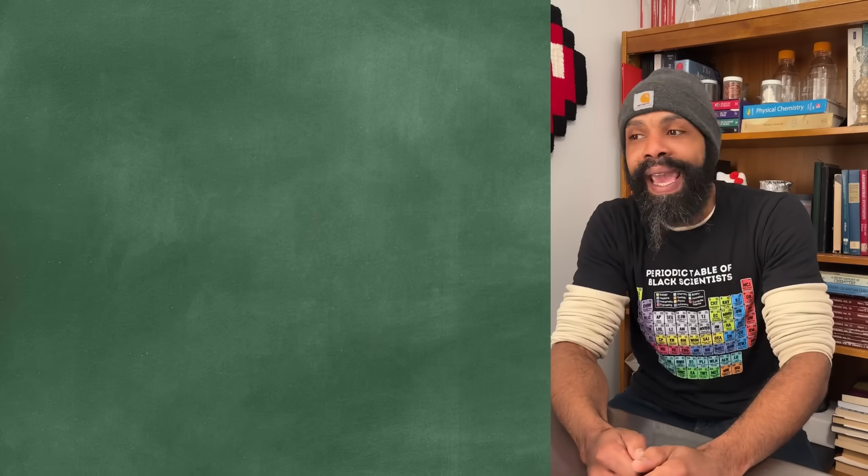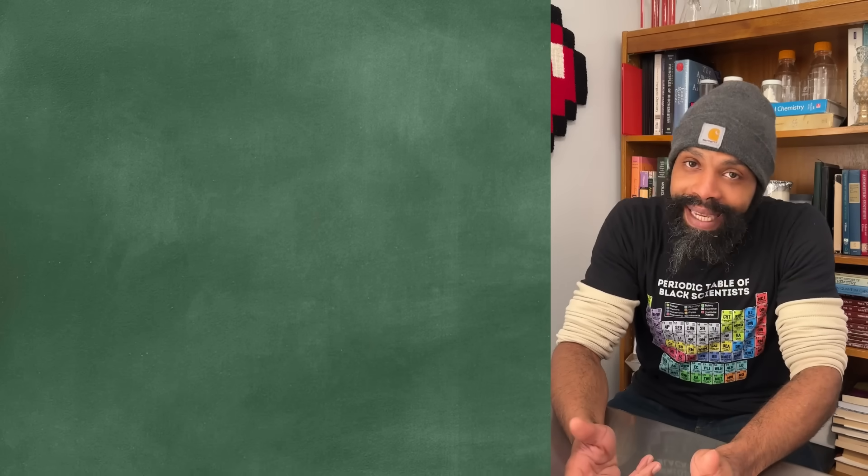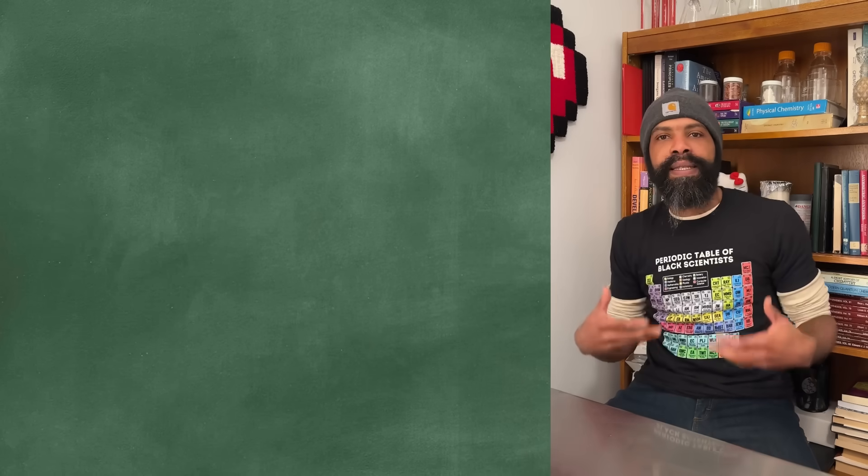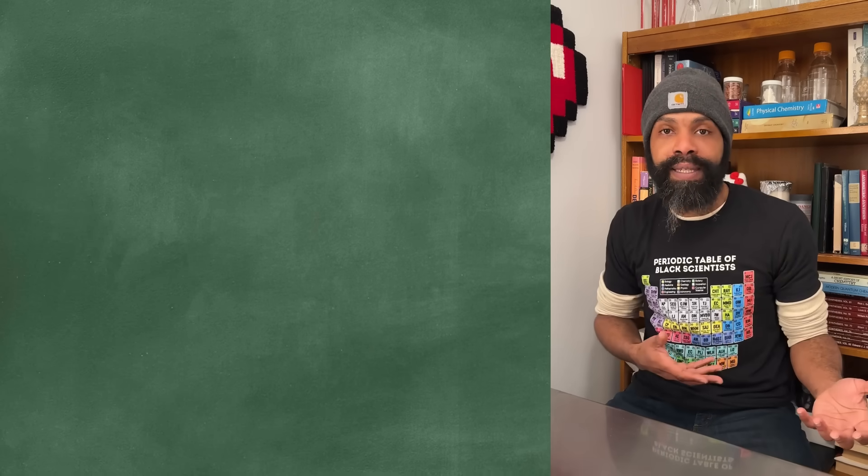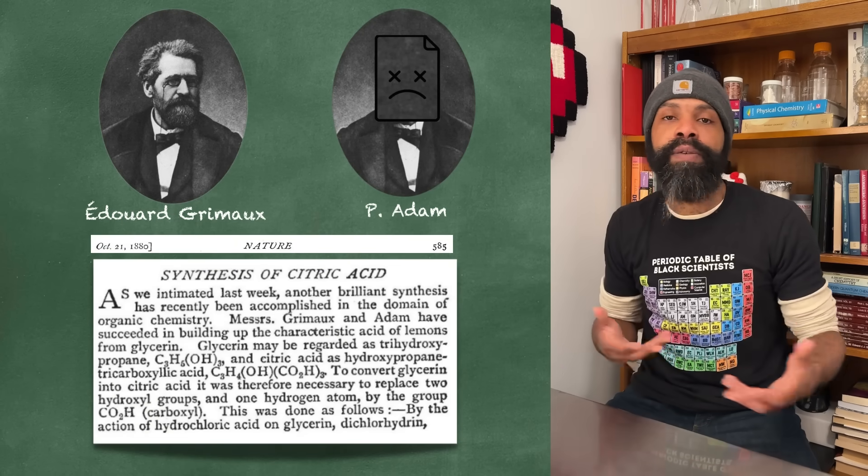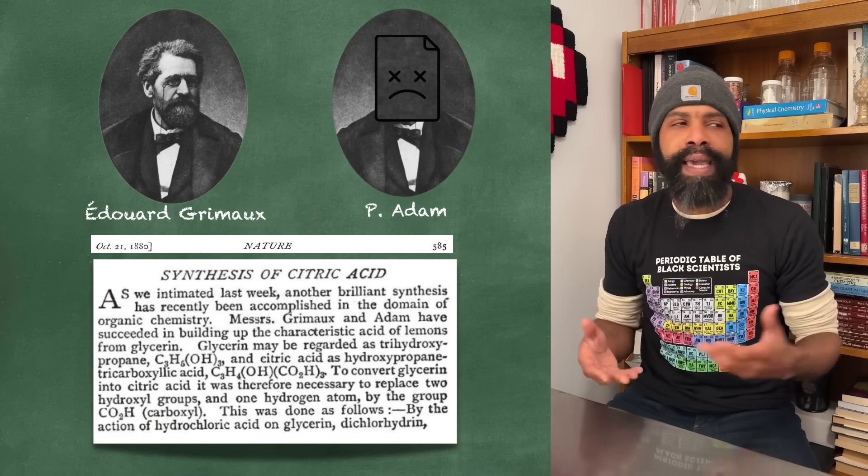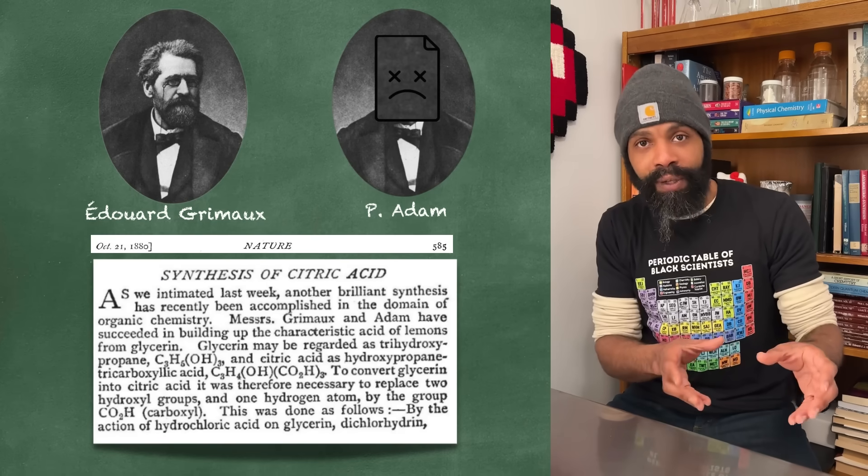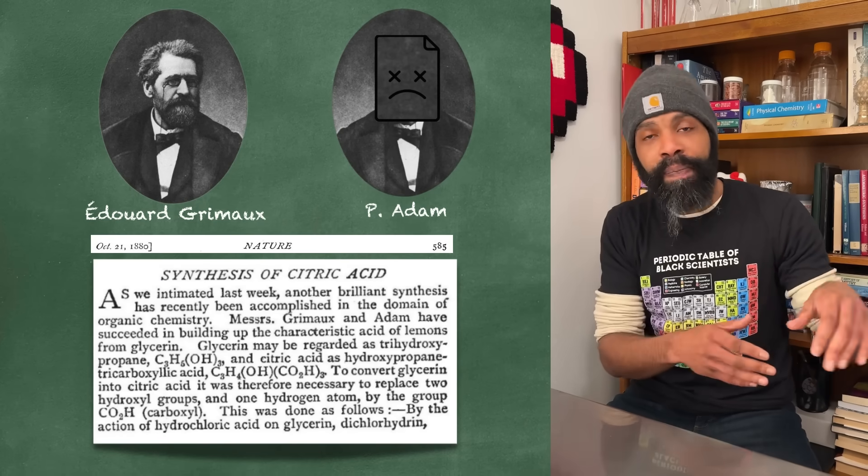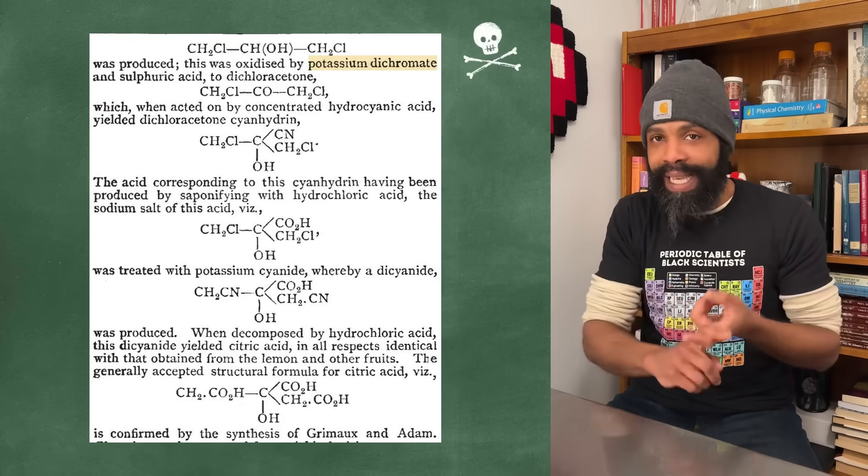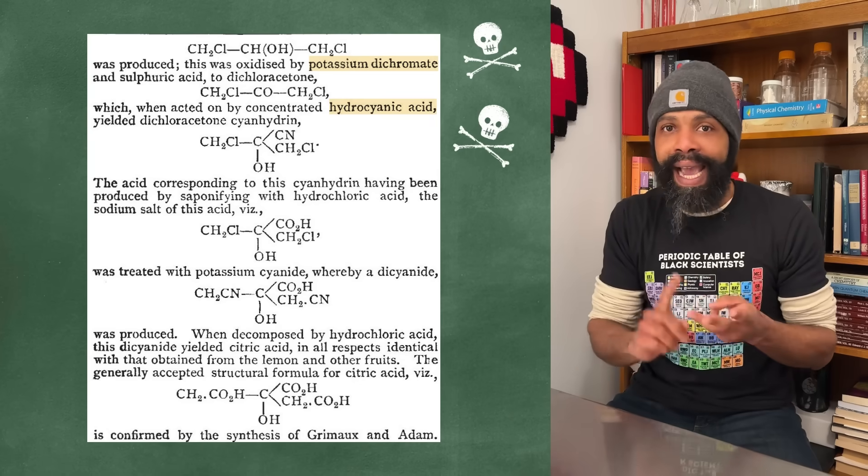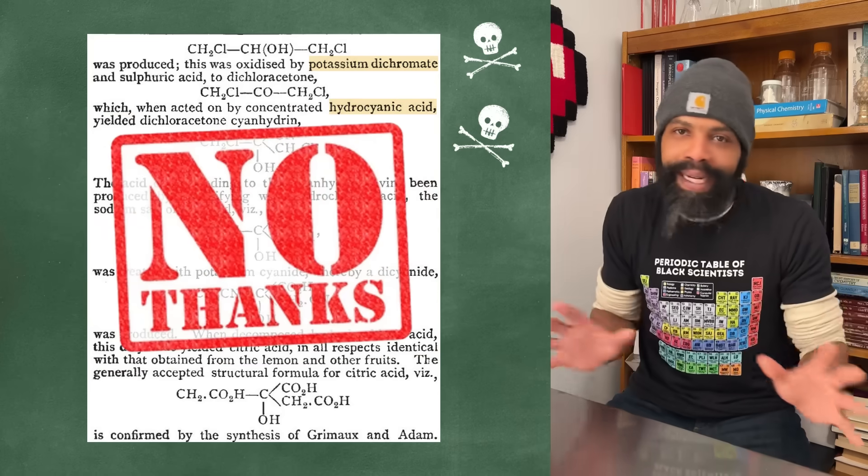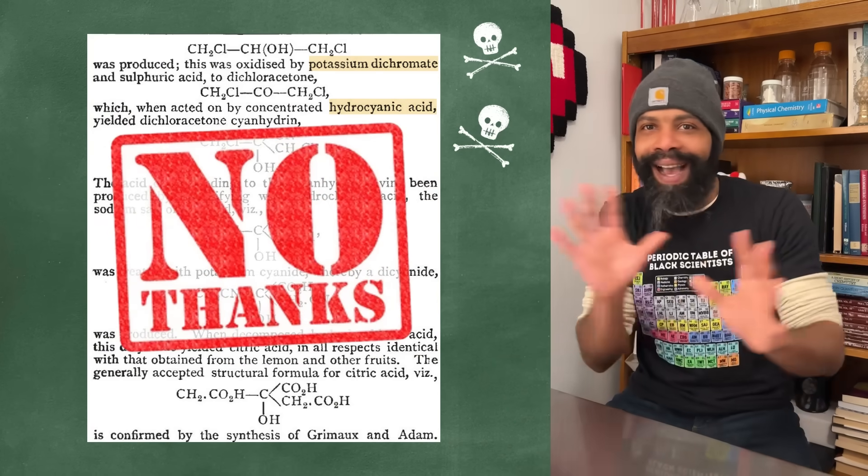And unfortunately, making it in the lab, not a vibe. The best synthesis that was developed for citric acid was developed by this gentleman Louis Grimaux and his colleague Adams. Their synthesis starts from glycerol, the stuff you get when you saponify soap, and requires potassium dichromate and cyanide in two steps. You don't want none of that near anything you're going to eat. Like nah.